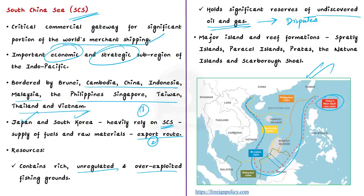Based on the nine-dash line, China claims all features and adjacent waters within it, but does not specify whether the underlying principle is historical or legal — only based on such facts could it be accepted as an important distinction under international law. Even though China doesn't prevent passage of commercial vehicles in the South China Sea, it prohibits foreign military ships from conducting operations in the waters it claims.